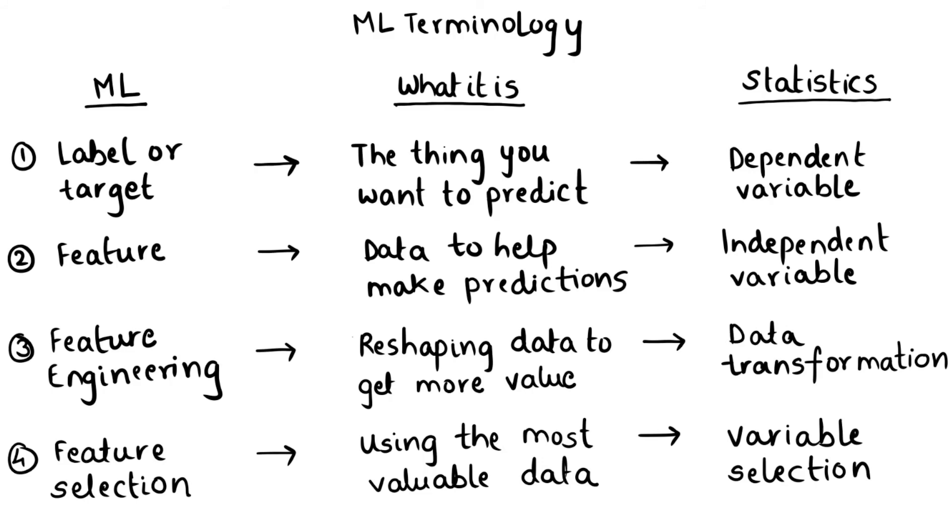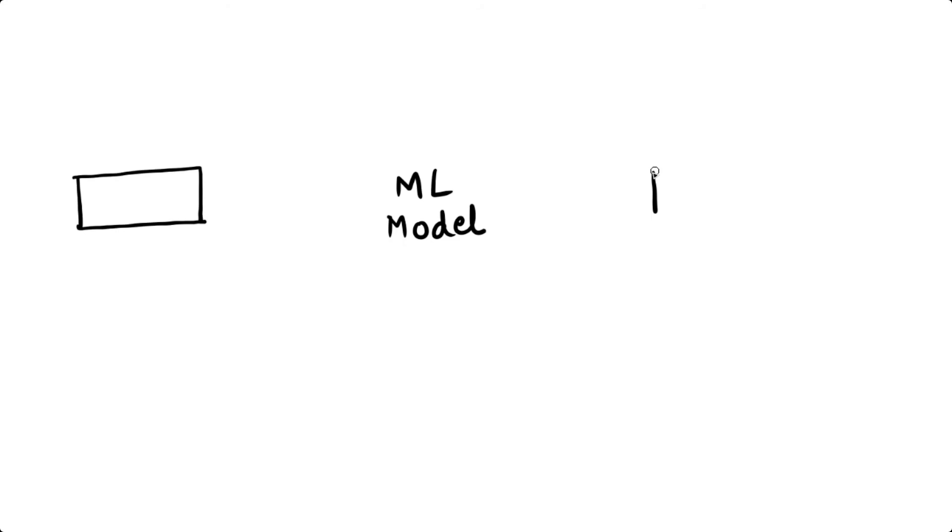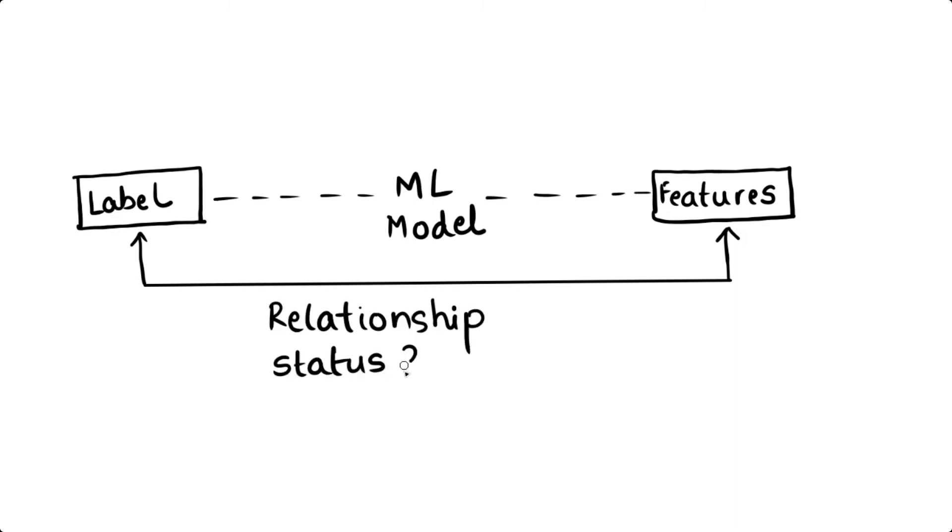So what is the relationship between a label and a feature? Well, that is essentially what machine learning is all about. Machine learning is developing a model that defines the relationships that exist between features and labels. So in the spam detection model that we mentioned, we would look for all those features that would strongly indicate that an email is spam.